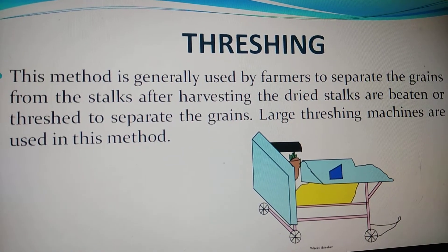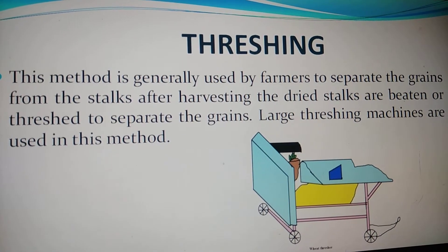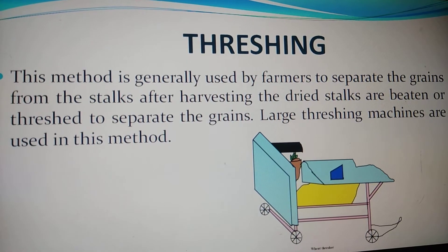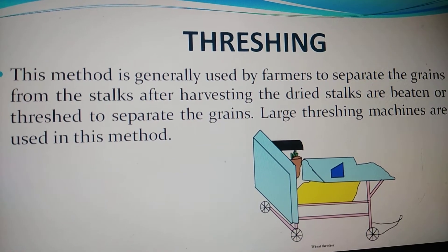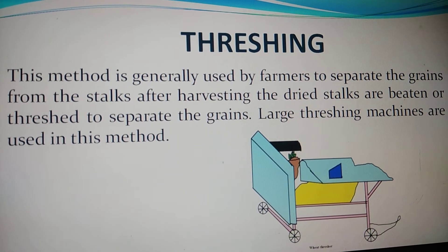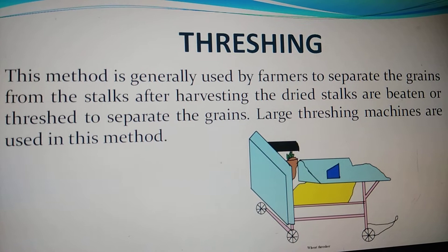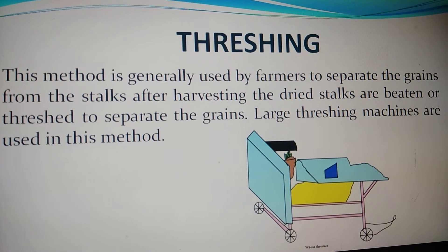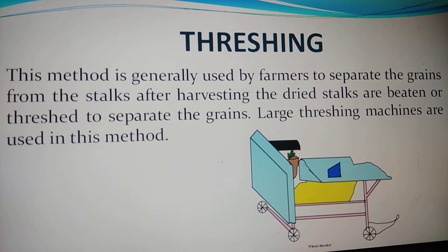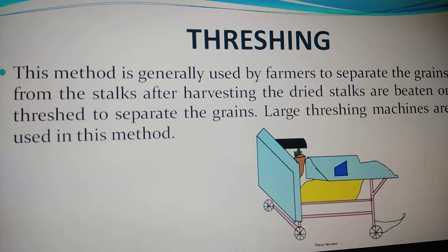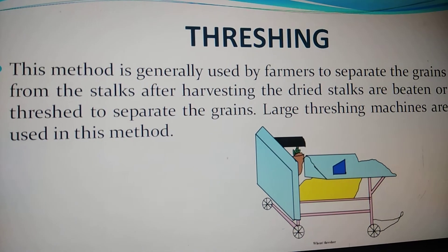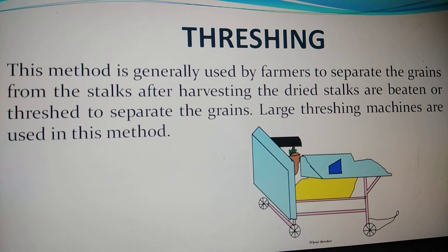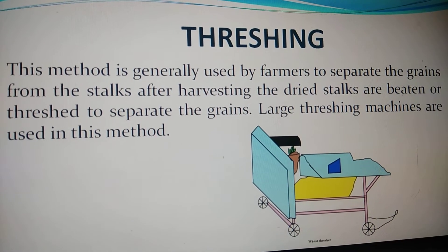Nowadays, farmers are using a machine called a combine, where these two processes can be easily done together. They first harvest the crop, and threshing is simultaneously also done by using such machines.